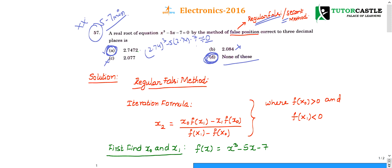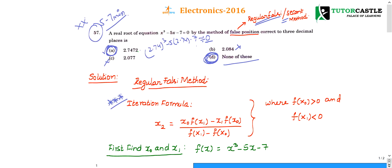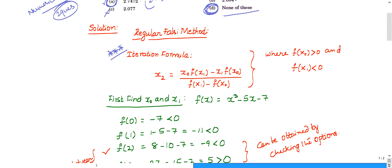Let us see the regular method, subjective method, how to do this question. So regular falsie method. In regular falsie method, the iterative formula is, this is the iterative formula. Please try to remember. In 2016 ISRO, two questions from numerical methods have been asked. So try to concentrate on the chapter called numerical methods.